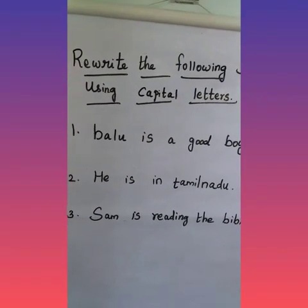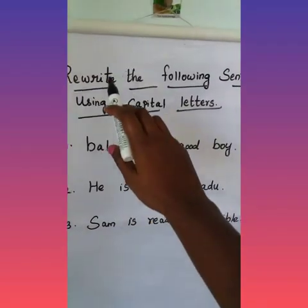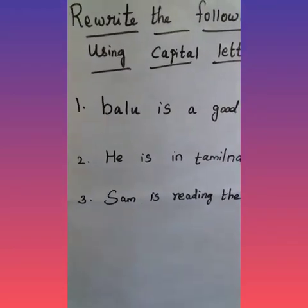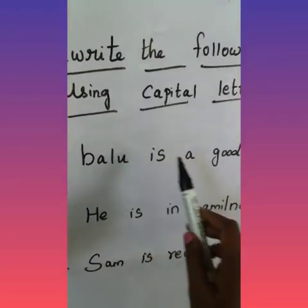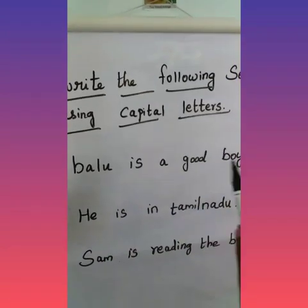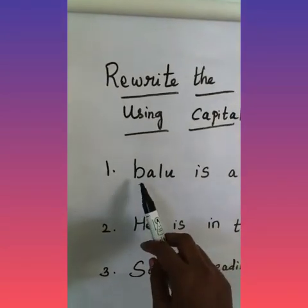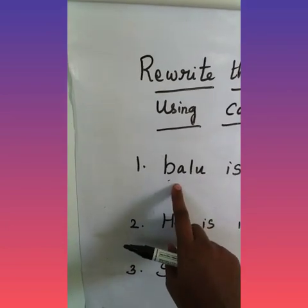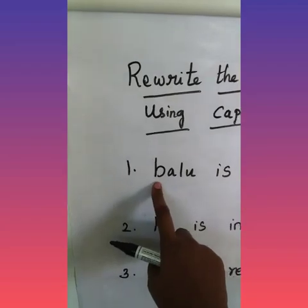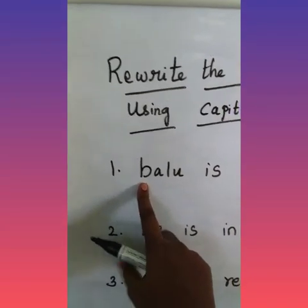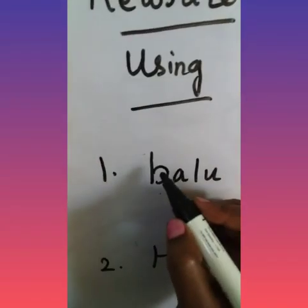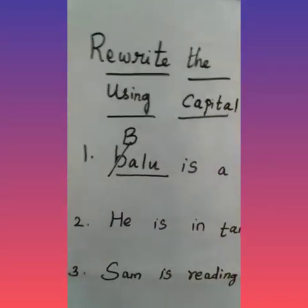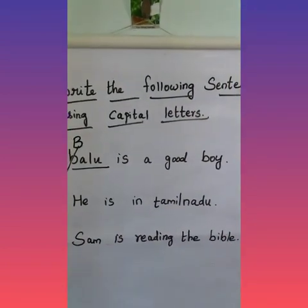Students, let us see a few examples — how to rewrite the following sentences using capital letters. Baloo is a good boy. It is a name of a person. So here the first letter should be written as a capital letter — capital B — because it is a name of a person. Baloo is a good boy.